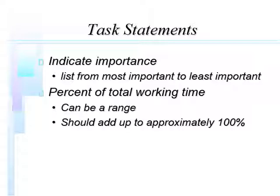Once you have task statements, indicate their importance by listing them from most important to least important, and also include the percentage of total working time — which can be a range but should add up to approximately 100%. Note that importance and time are separate — the most important thing you do may only be 1% of your time, but it would still be at the top of the list. A good task list is rank-ordered by importance and includes approximately how much time is spent on each task in an average workday or work week.